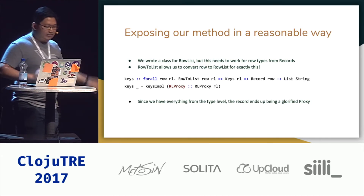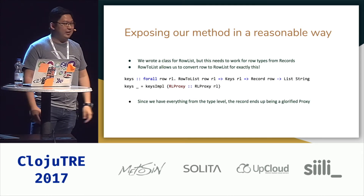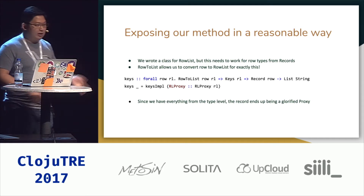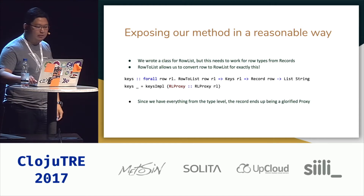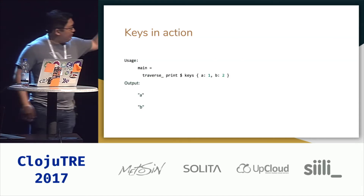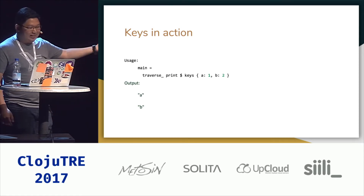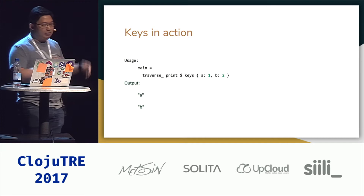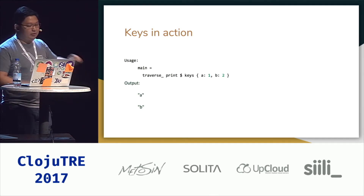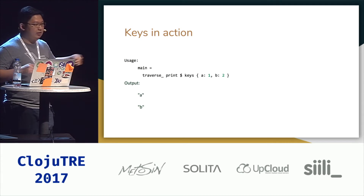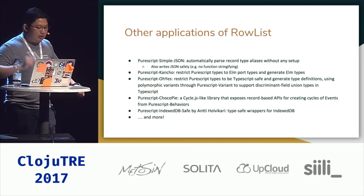Since we're not using the actual record here, it kind of becomes a glorified proxy — but for many more interesting use cases you'd actually need to pass through the record. If you actually use this, it looks kind of boring: you traverse the structure, print out the things, and get back the list of keys by calling keys with a record with fields like A1, B2.